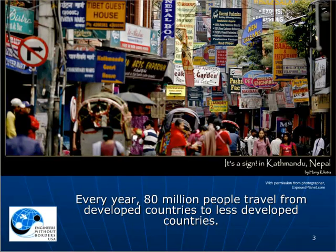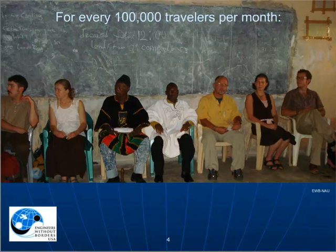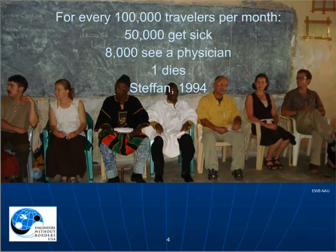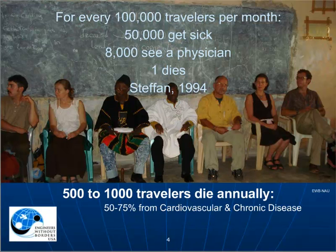Let's start with some statistics. Every year, 80 million people travel from developed countries like the U.S. to less developed countries. For every 100,000 travelers per month, 50,000 get sick, 8,000 see a physician, and one dies. This adds up to 500 to 1,000 deaths annually amongst travelers. Most deaths are from diseases travelers bring with them, such as heart disease, diabetes, and lung disease. However, a quarter of the deaths are from trauma — overwhelmingly from motor vehicle accidents — and about 4% of travel-related deaths are from infectious disease. Most deaths from trauma and infectious disease can be prevented.